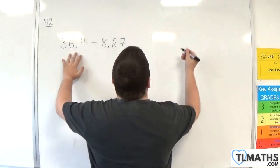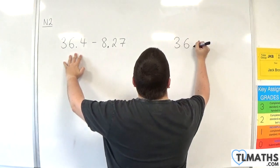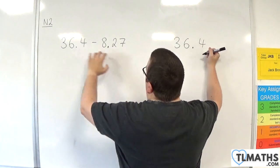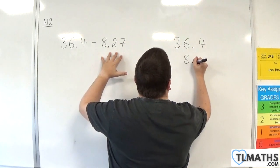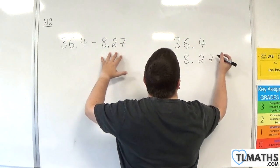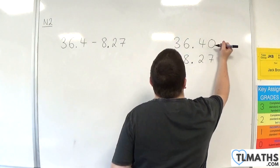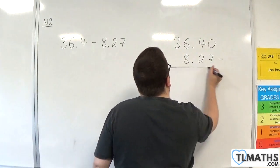So, 36.4. And we need to make sure that 8.27 goes below and that the decimal points line up. So, 8.27. And any gaps, fill them in with zeros.